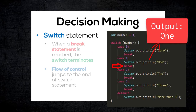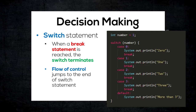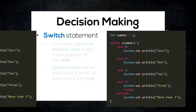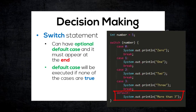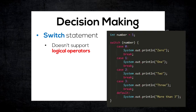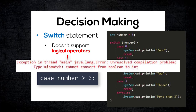When a break statement is reached, the switch terminates and the flow of control jumps to the end of the switch statement. Although the break statement is not mandatory, it is necessary — otherwise it will fall through to subsequent cases until a break is reached. A switch statement can have an optional default case, which must appear at the end of the switch, and the default case will be executed if none of the cases are true. Lastly, the limitation of a switch statement is that it doesn't support logical operators, and if we do something like that the compiler will throw a compilation error. This is in fact one of the reasons why the if-then-else statement is more popular and will be used in most cases.